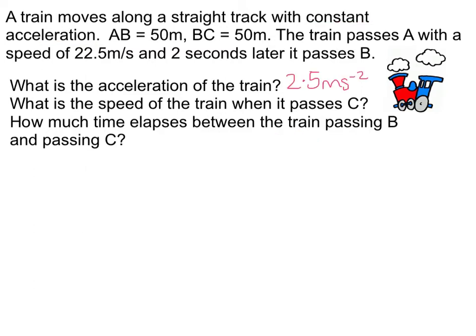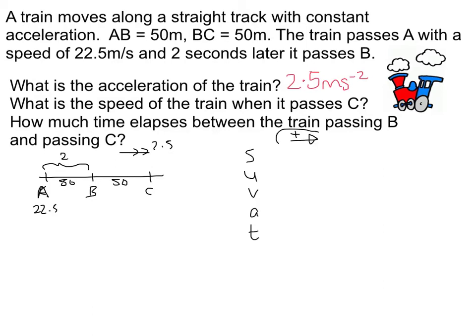That's the first bit done. Now for the speed of the train when it passes C. We know A to B is 50 metres and B to C is 50 metres. We know the speed at A, and the acceleration is 2.5 metres per second squared. I'm going to set up a SUVAT taking right to be positive. I'll do A to C because I've got more information about A than about B.